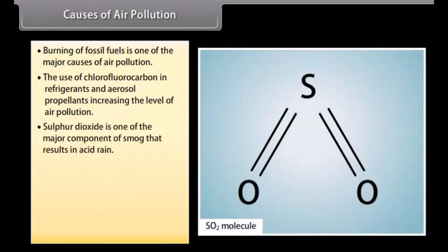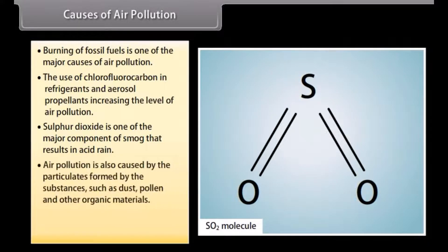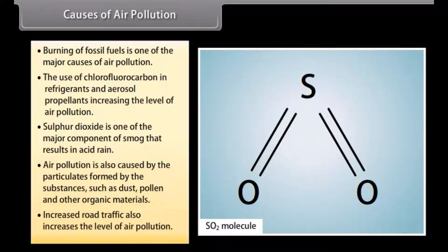Sulfur dioxide is one of the major components of smog that results in acid rain. Air pollution is also caused by particulates formed by substances such as dust, pollen and other organic materials. Increased road traffic also increases the level of air pollution.